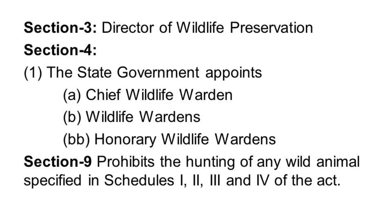In Section 3, the Director of Wildlife Preservation is appointed. The state government appoints the Chief Wildlife Warden, Wildlife Warden, and Honorary Wildlife Wardens. In Section 9, it prohibits the hunting of any wild animal specified in Schedules 1, 2, 3, and 4 of the act. There are six schedules in the act. In Schedule 5, vermin is mentioned — vermin are common crop pests such as mice and rats. In Schedule 6, specified plants are mentioned.